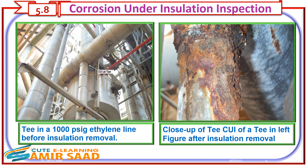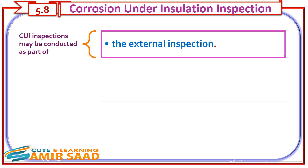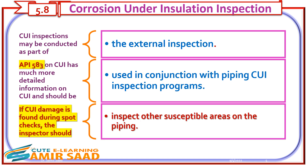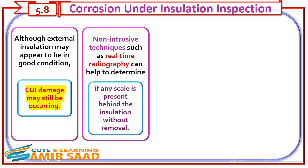Corrosion under insulation inspections may be conducted as part of the external inspection. API 583 on CUI has much more detailed information on CUI and should be used in conjunction with piping CUI inspection programs. If CUI damage is found during spot checks, the inspector should inspect other susceptible areas on the piping. Although external insulation may appear to be in good condition, CUI damage may still be occurring. Non-intrusive techniques such as real-time radiography can help determine if any scale is present behind the insulation without removal.